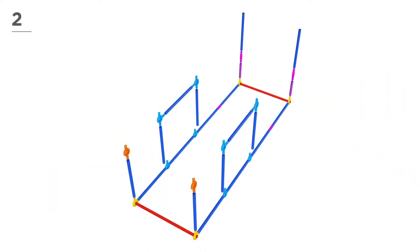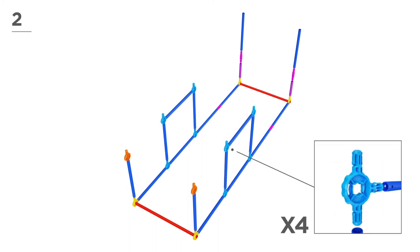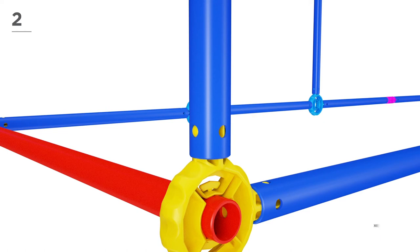Now, with 10 navy poles, 2 magenta poles, 2 orange connectors, 4 blue connectors, and 2 pink connectors, build the sides like this. You're doing great!